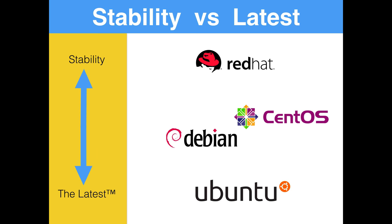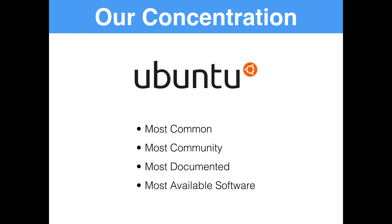Ubuntu always gets the latest software, but things can break when you keep updating software really often on your server. We're going to keep using Ubuntu for the following reasons: it's the most common distribution of Linux for both server and desktop, it has the most community, the most documentation easily found online, and the most available software — making it really easy to get the newest stable versions of everything we might want. So we're going to concentrate on Ubuntu servers here.